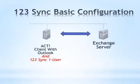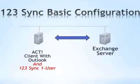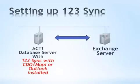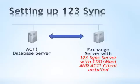Let's look at a couple of basic configurations of 123 Sync. What we have here is a desktop running an ACT client accessing a database — could be local or even remote — with Outlook. We simply sync ACT with Outlook, get the data there, and that makes it to the Exchange server. Another configuration is for people who have dedicated ACT servers — we install 123 Sync with CDO, MAPI, or Outlook, and that syncs with Exchange. Or some people have dedicated ACT servers and install 123 Sync with MAPI to sync an Exchange server to ACT.